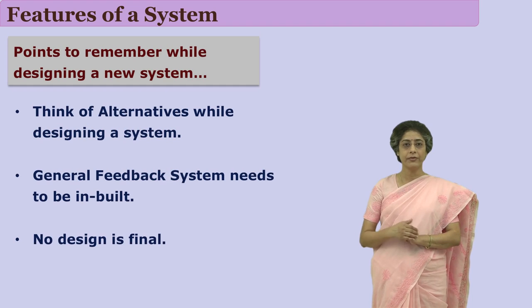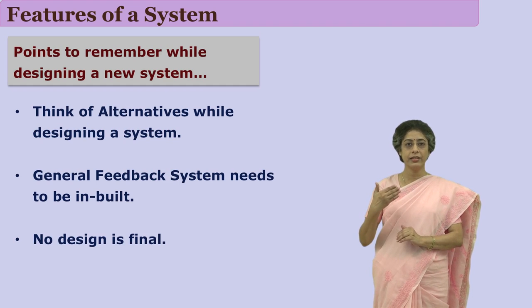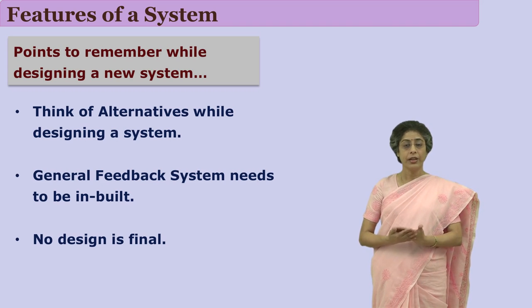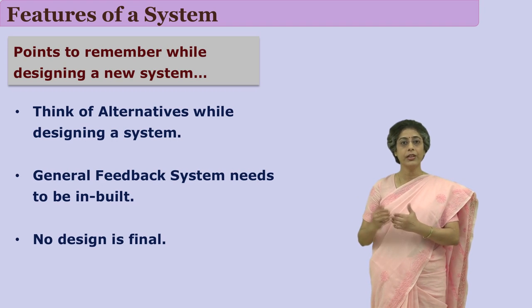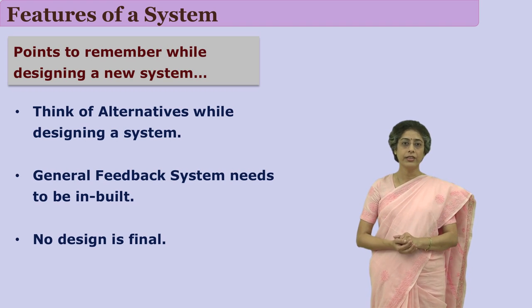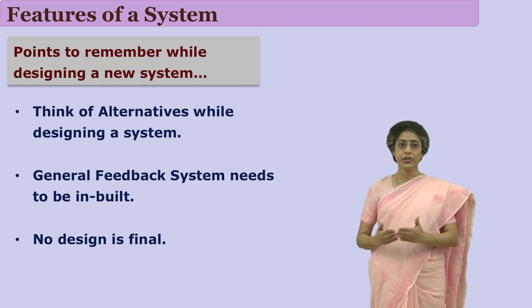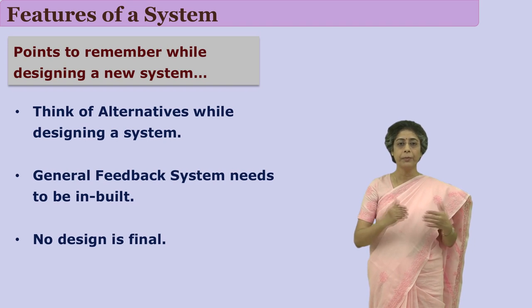In systems approach we design a very systematic, planned system. When we design such a system, we need to find out better alternatives. Maybe a system is getting designed to solve a particular problem — in such cases there need to be three or four alternatives ready, so if one alternative fails there should be some other alternative to implement.